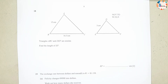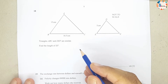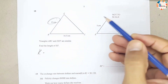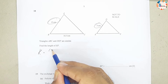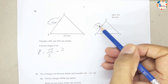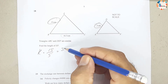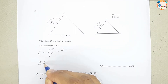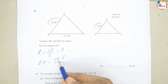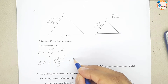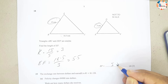Question number 18: triangles ABC and DEF are similar — find the length of EF. The scale factor k is found by comparing corresponding sides: 15/5 = 3. So to find EF, divide the corresponding side 16.5 by 3, giving EF = 5.5 cm.